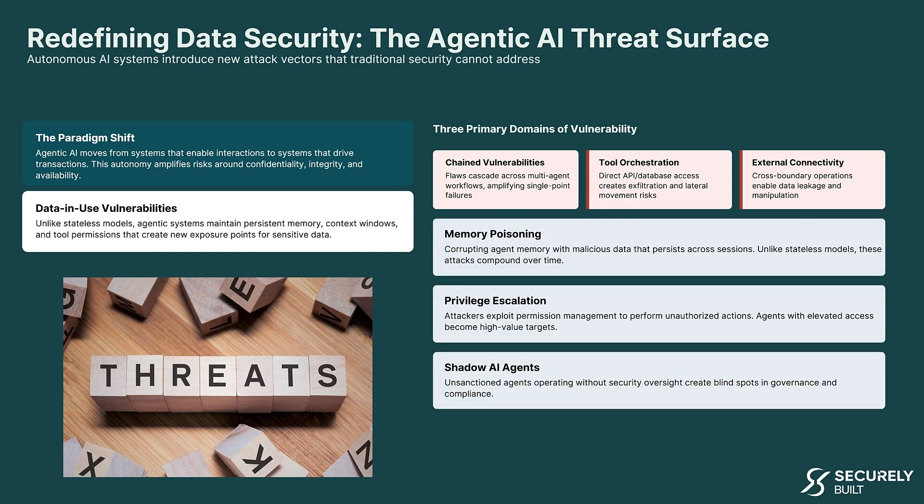Specific attacks we need to worry about include memory poisoning, where attackers corrupt agent memory with malicious data that persists across sessions. Unlike stateless models, these attacks compound over time, making them particularly dangerous. There's also privilege escalation, where attackers exploit permission management to perform unauthorized actions — agents with elevated access become high-value targets. And finally, shadow AI agents: unsanctioned agents operating without security oversight, creating blind spots in governance and compliance.